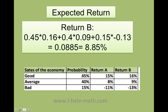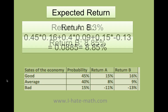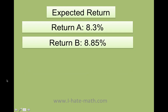Awesome. Let's do the same with Stock B. I'm doing 0.45 times 0.16 — basically I make everything into decimals — plus 0.40 times 0.09, plus 0.15 times negative 0.13. And voila, I get 8.85%. I can figure out that Stock B is actually the best investment.